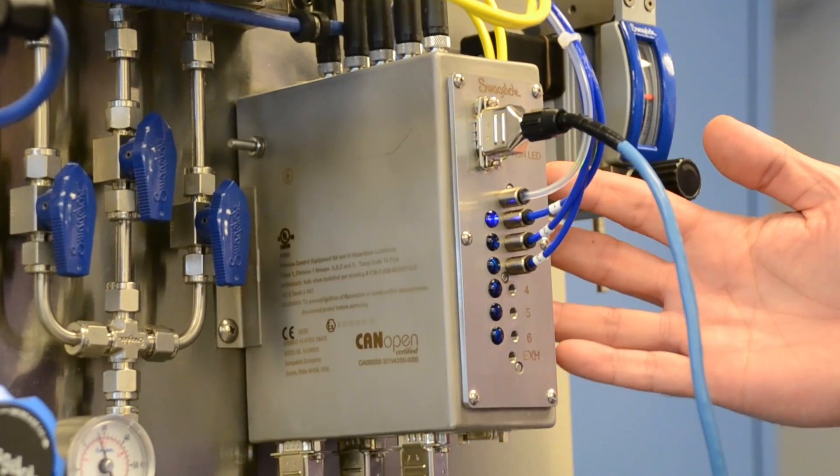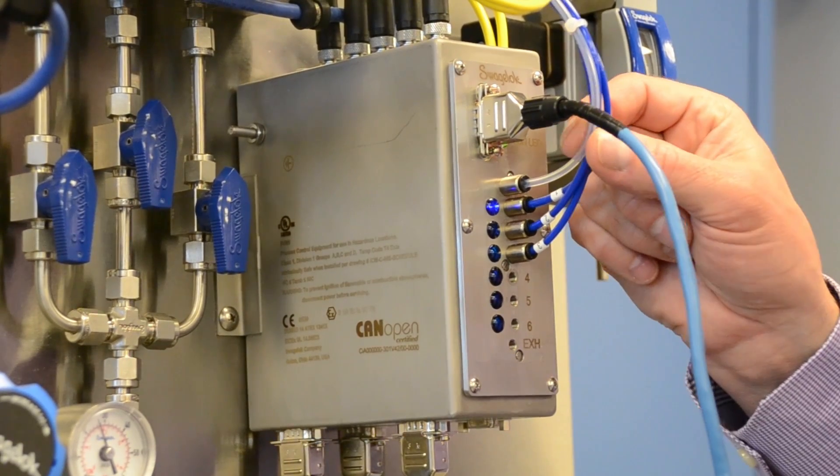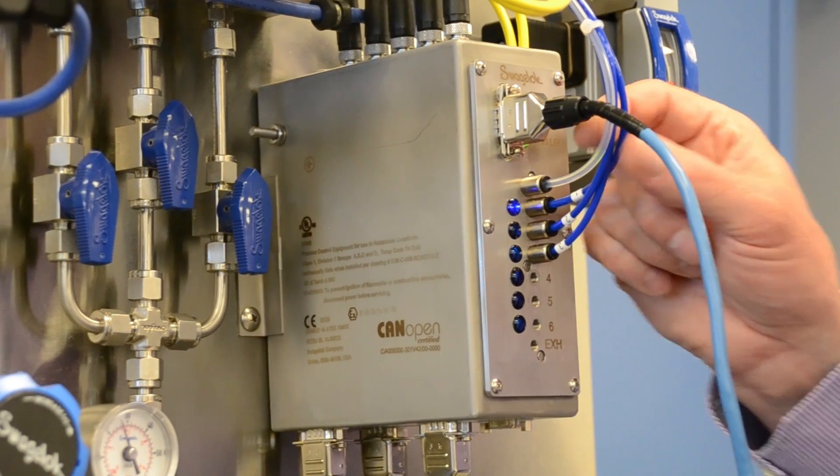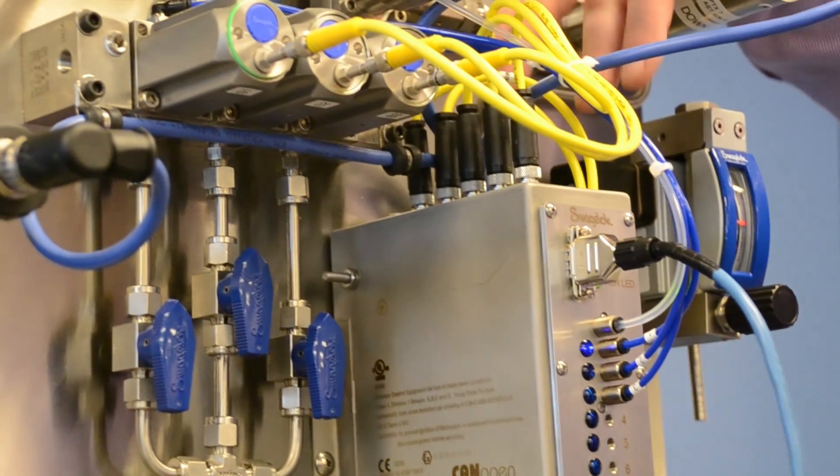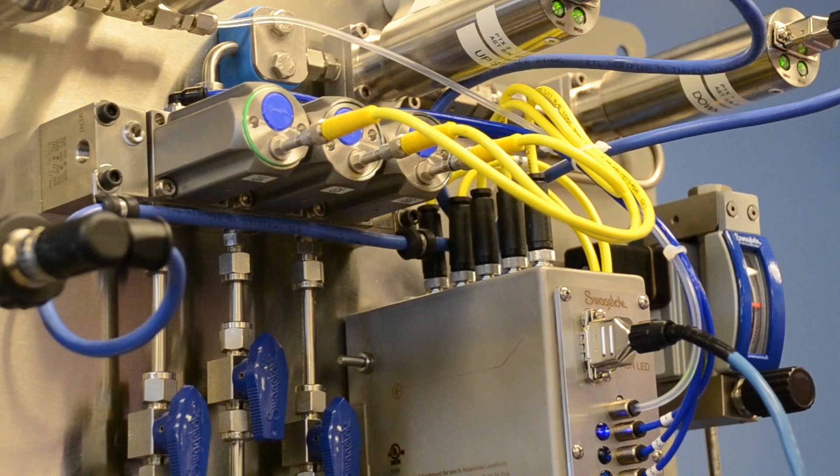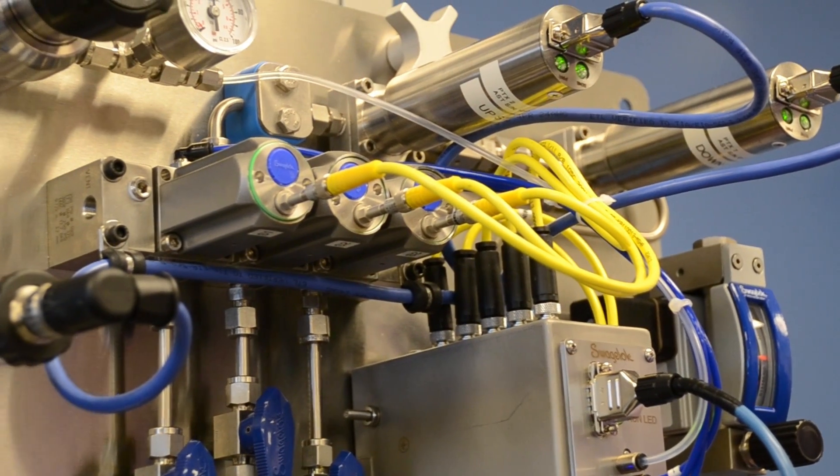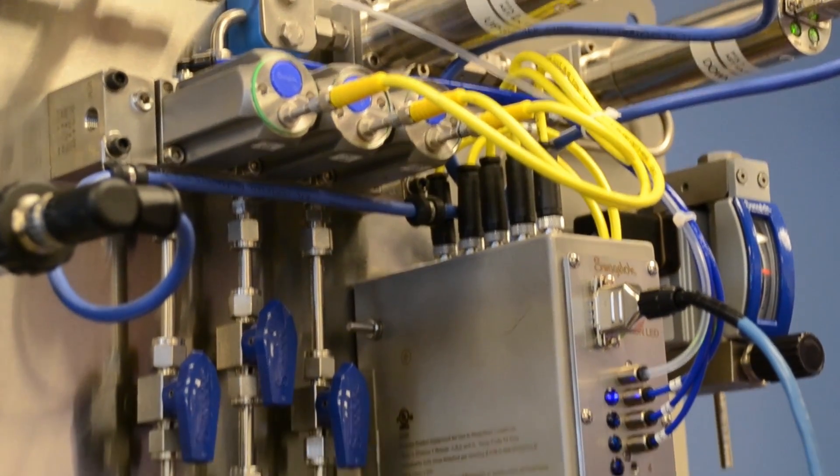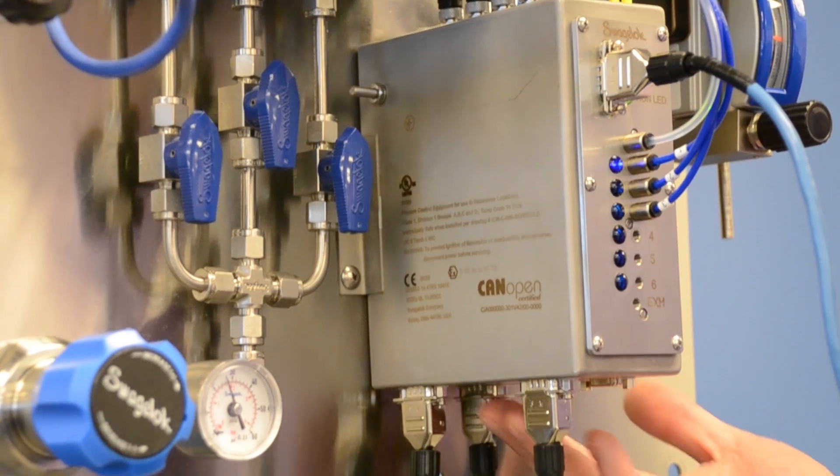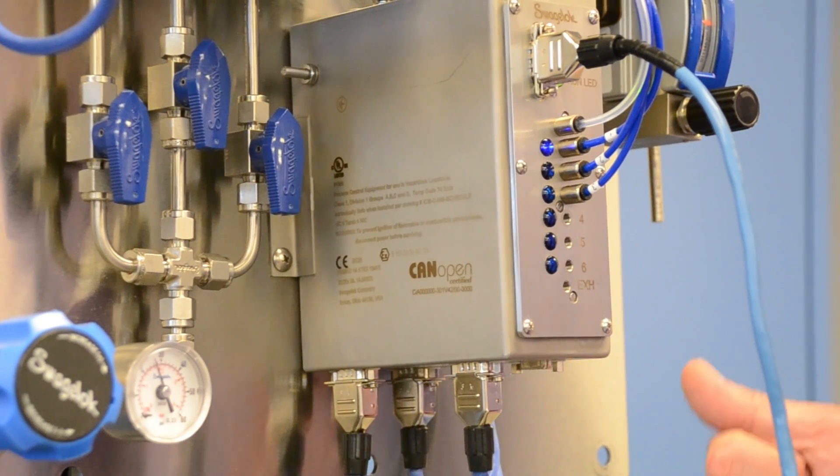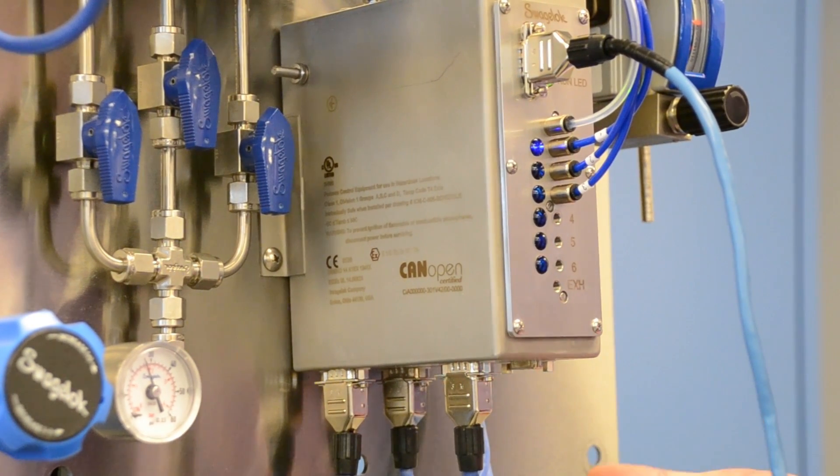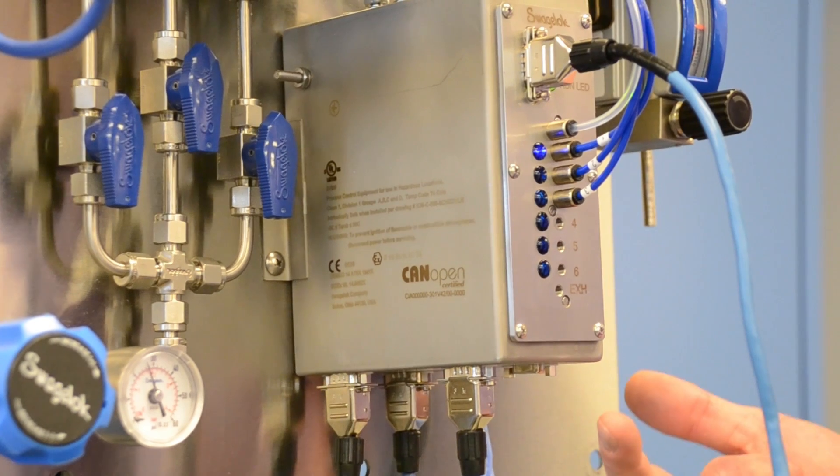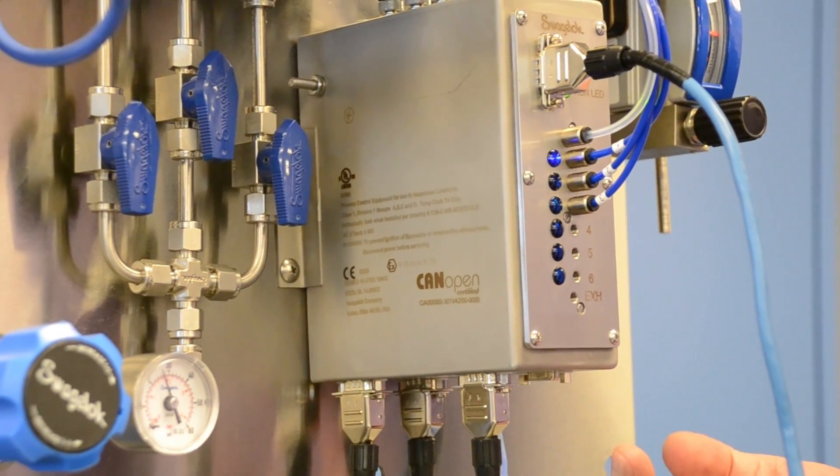So with an ICM, you can actuate valves with its pneumatic outputs, you can monitor digital inputs with its digital inputs, and you can monitor and power your sensors with its analog ports. There are four ports on the bottom of the ICM. Each port has both voltage inputs and a current input that make it versatile for use with a wide variety of sensors.